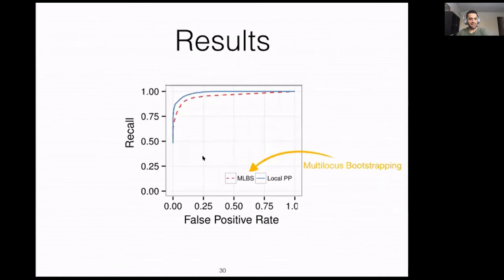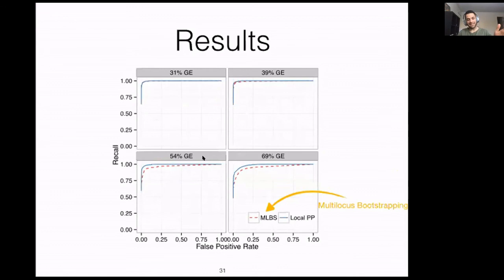The results show, on the x-axis false positive rate and y-axis recall: MLBS is multi-locus bootstrapping and Local PP is my method. We get a better ROC curve with our method. Importantly, in this experiment we greatly violated all of our assumptions. If we decrease the amount of gene tree error, multi-locus bootstrapping and local posterior probability converge and have similar performance. But for higher levels of gene tree error, local posterior probability outperforms multi-locus bootstrapping.